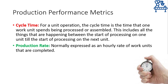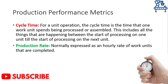The cycle time will allow us to figure out the production rate. However, cycle time is related to a single workstation, whereas production rate is for the whole manufacturing plant. Therefore, it is normally expressed as work units completed in a unit time, and the unit of time can be hours, days, months, or even years.